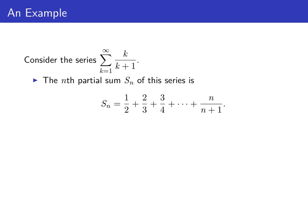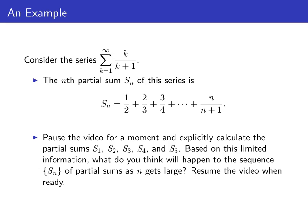The n-th partial sum S sub n of this series is the sum of the first n terms. The k equals 1 term is 1 half, the k equals 2 term is 2 thirds, the k equals 3 term is 3 fourths, and so on. So S sub n is 1 half plus 2 thirds plus 3 fourths, all the way up to n over n plus 1. Our goal is to determine if this sequence of partial sums converges or diverges. Pause the video for a moment and calculate the first five partial sums, and based on that information, make a conjecture as to whether you think this sequence converges or diverges. Then resume the video when you're ready.